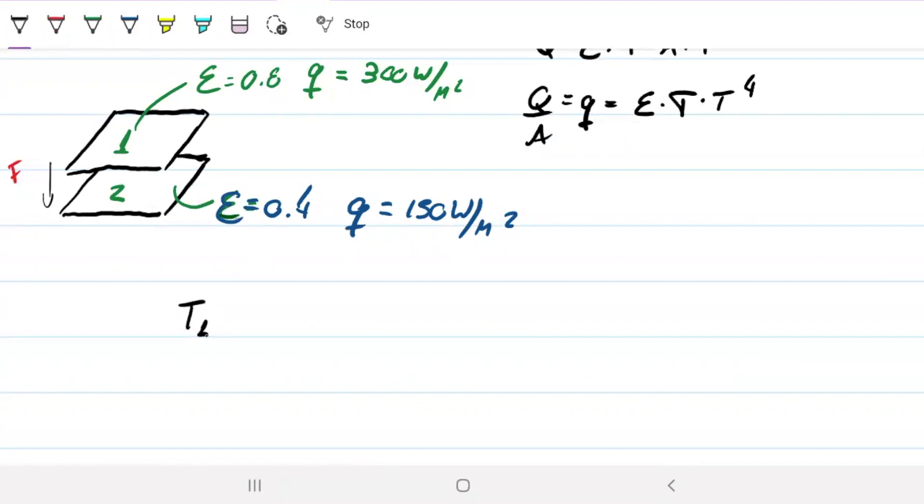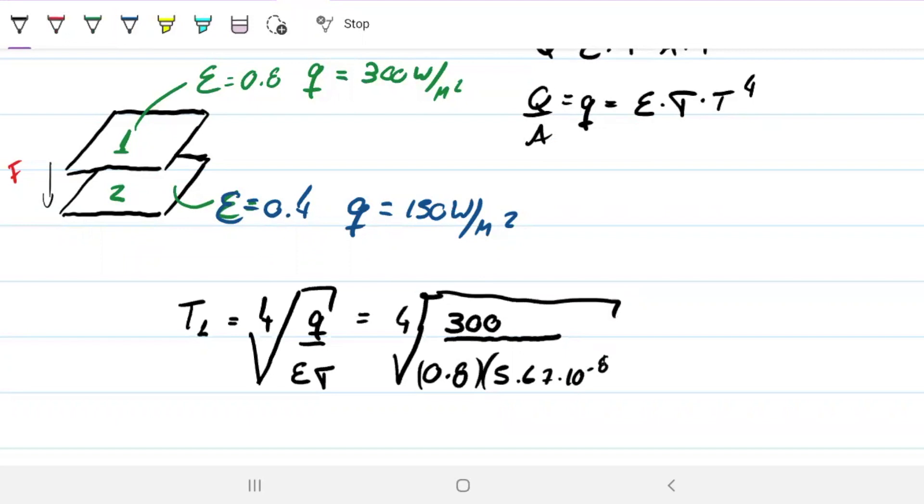Looking for T on the first one, that will be the fourth root of Q divided by emissivity, Stefan-Boltzmann. And that is 300 over 0.8, and then this guy here, 5.67 times 10 to the minus 8. That will be the temperature of the first one.